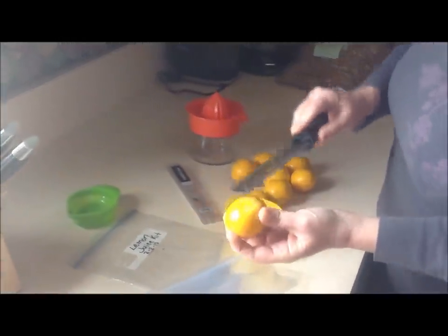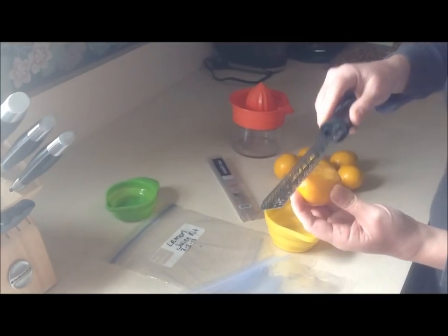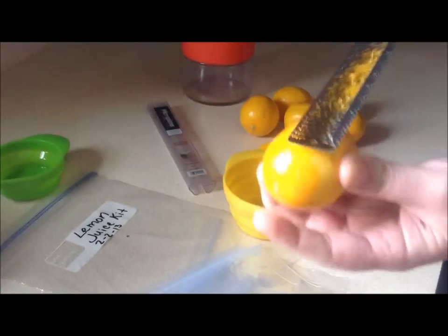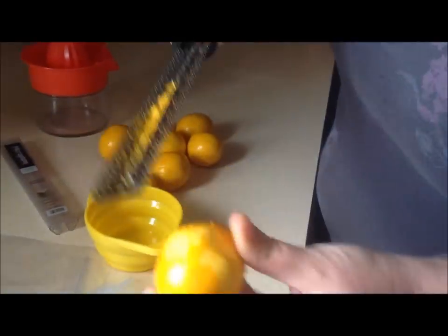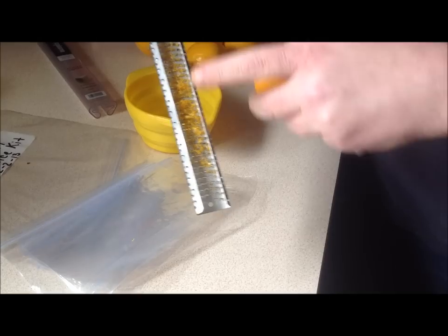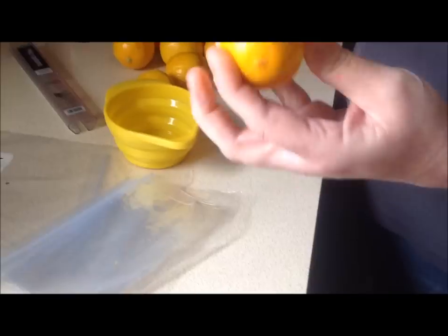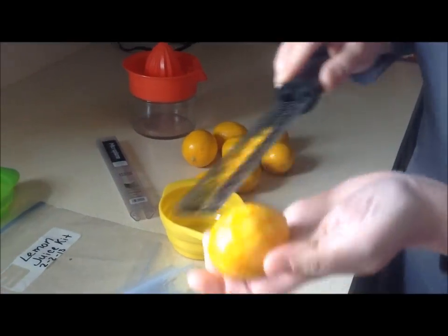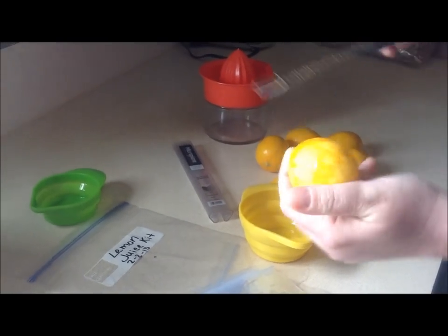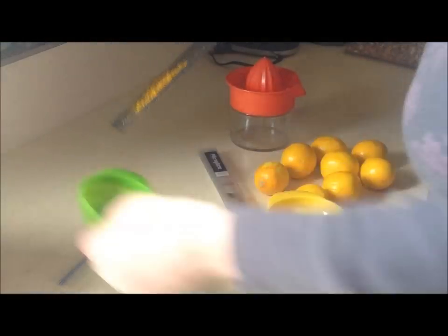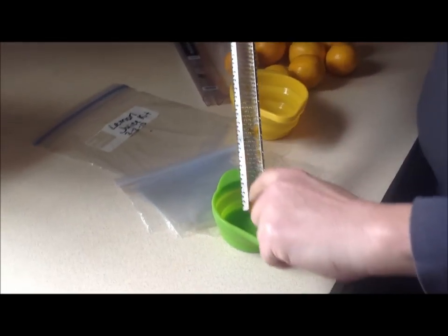You begin by zesting your lemons like this. You don't go too deeply into the lemon peel. Gently rub the zester across the lemon peel, taking it down to the pith, but not incorporating the pith into your zest. Your zest will slowly build up on the back of the zester. And when you're finished zesting, you just gently scrape all the zest into your container.